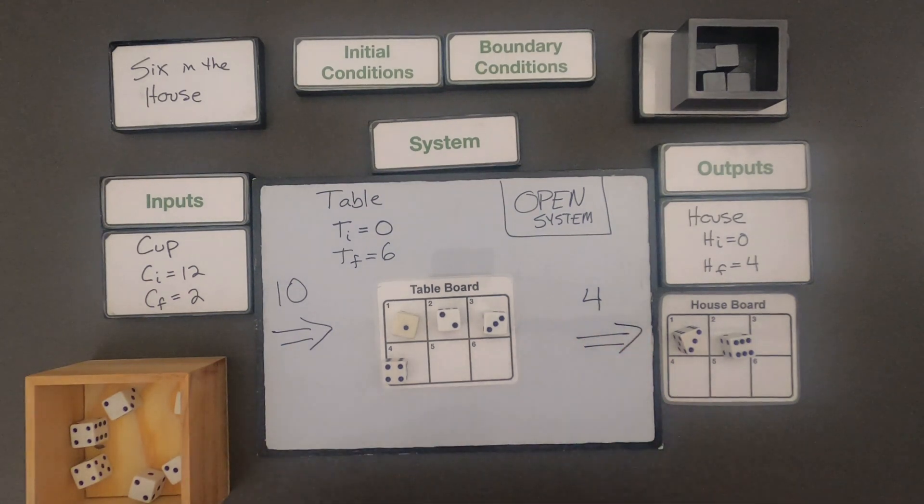This is dice now but it can eventually become things like carbon in different spheres on the planet. So let me set up the second one and then I'll let you look through it and try to figure out what are the initial boundary conditions in this game.